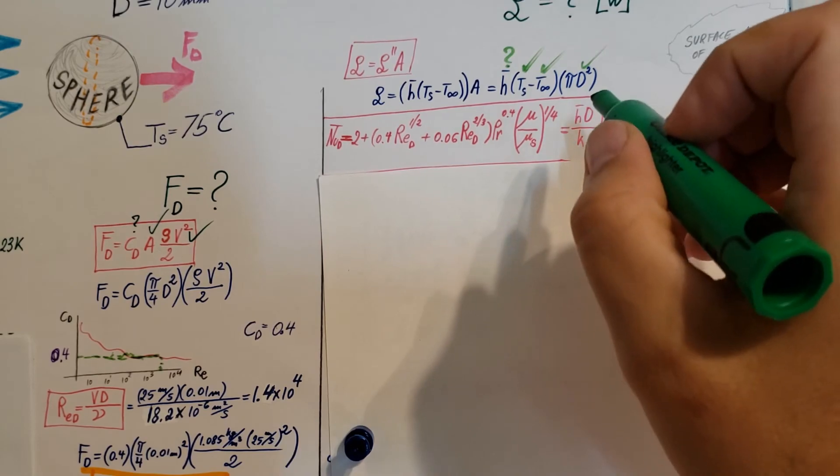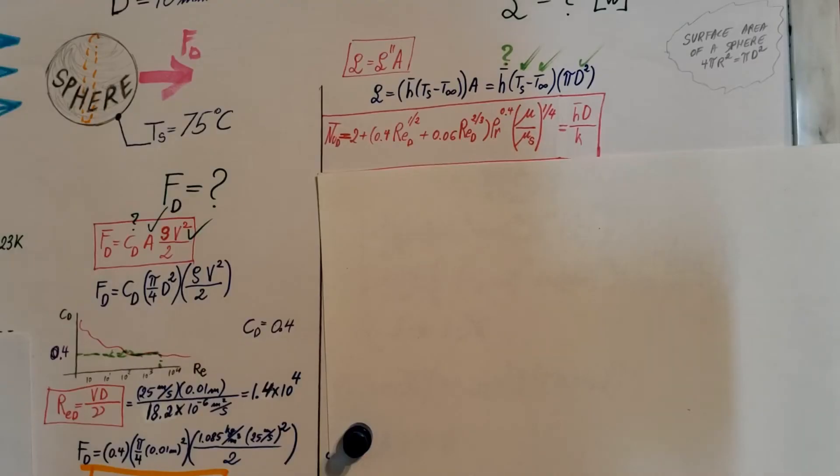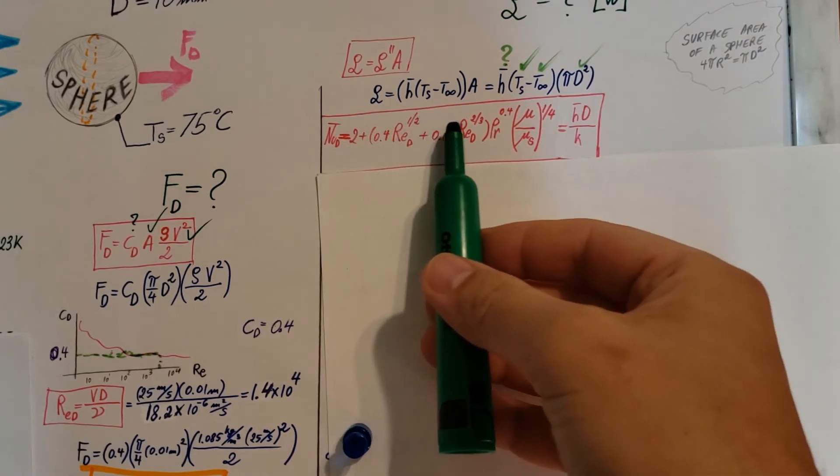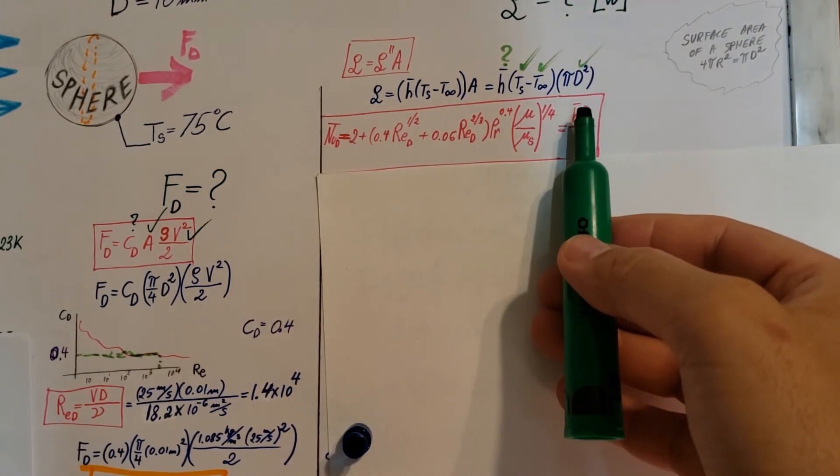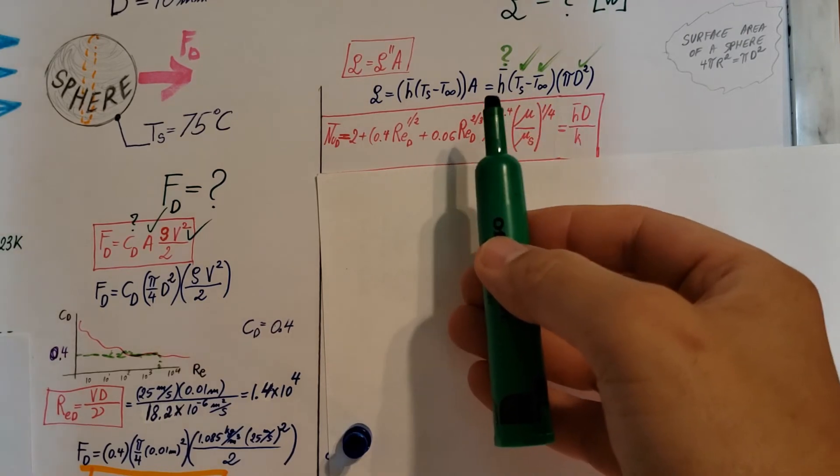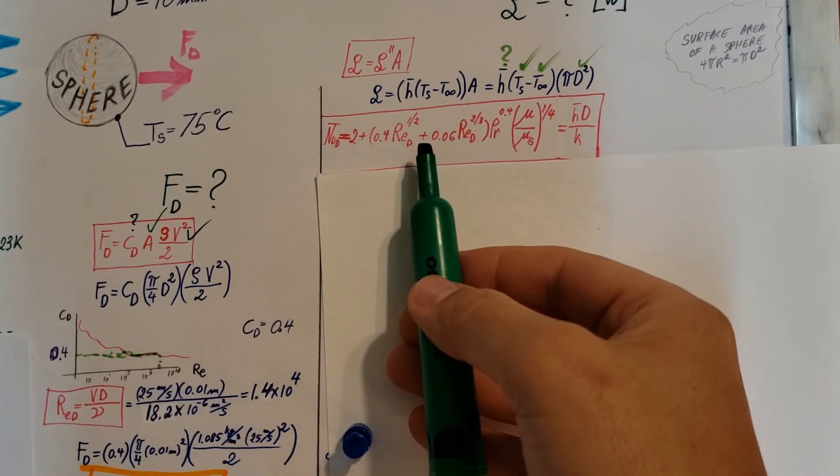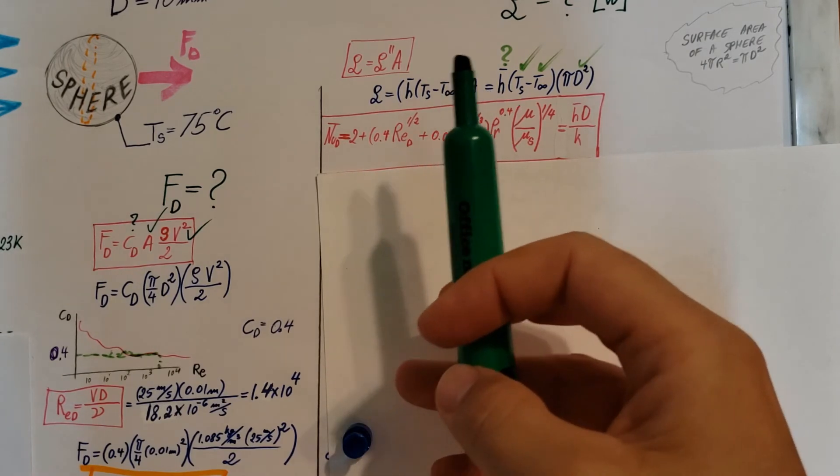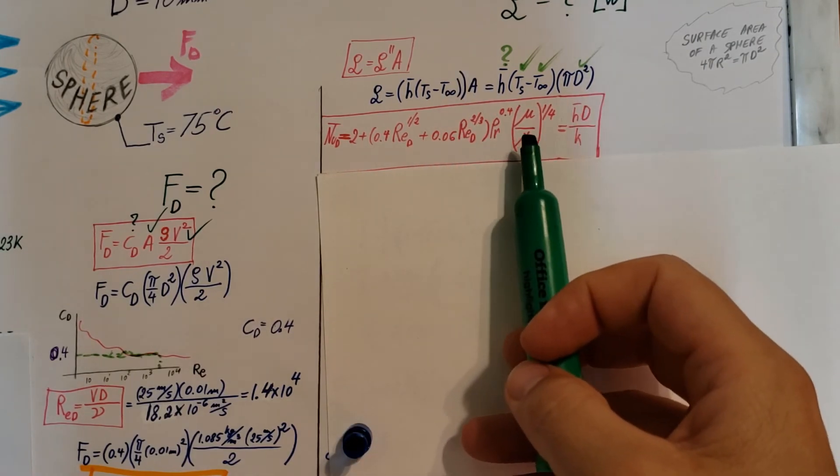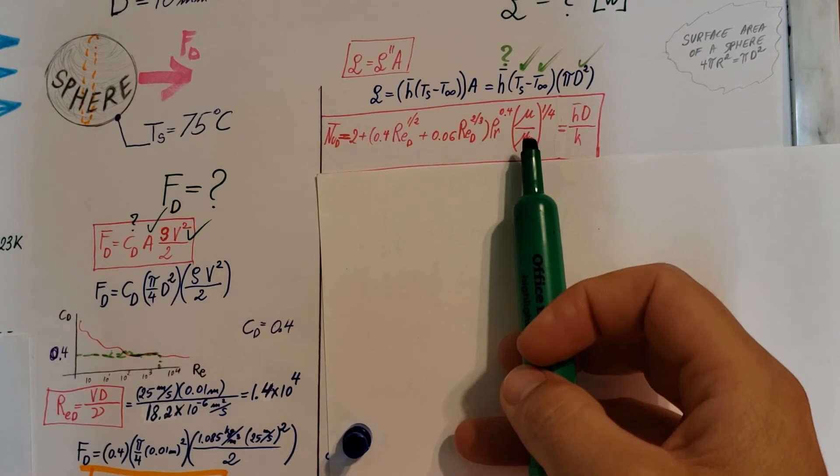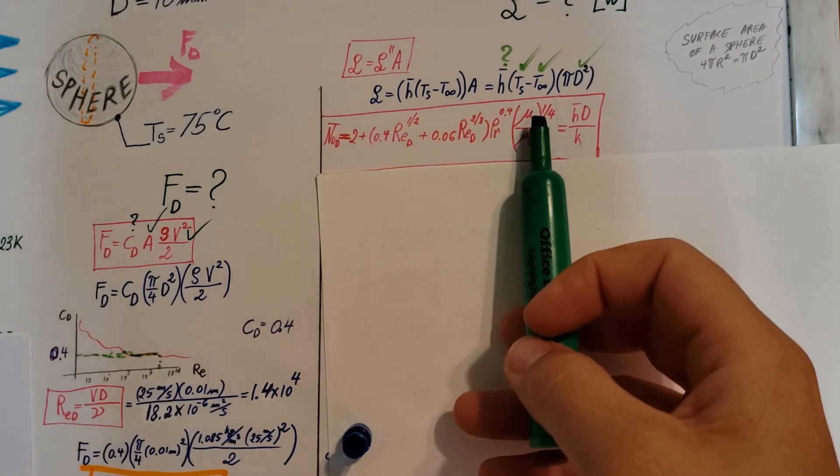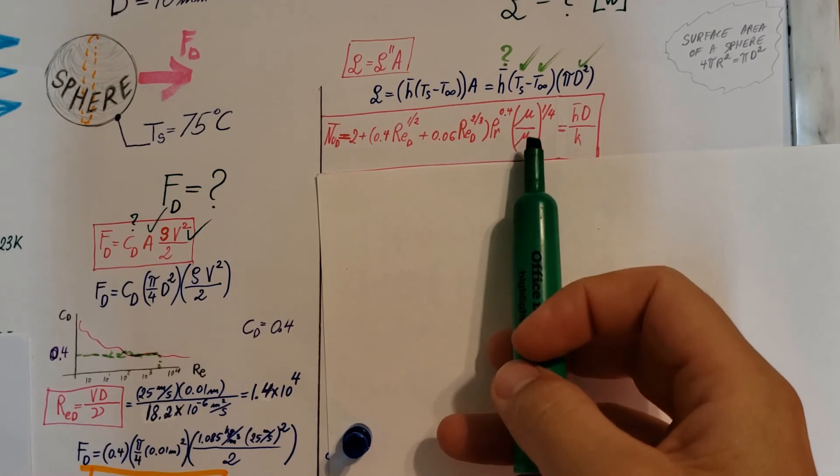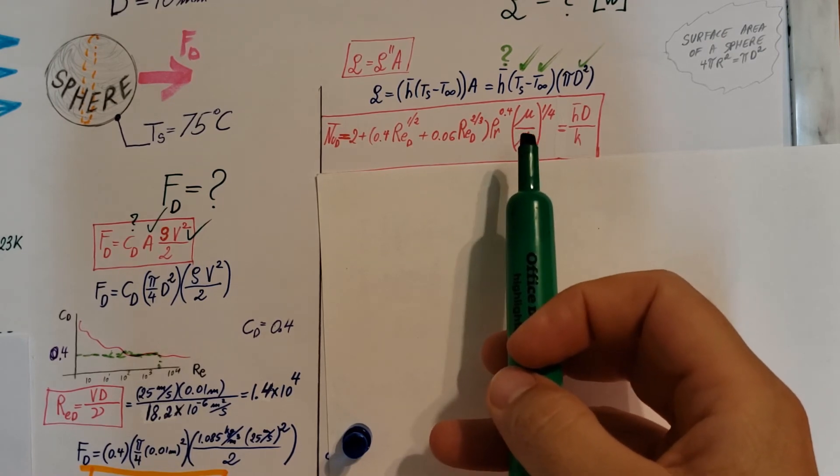There you go. Now one thing we need to remember when we're working with this formula is that all the properties from the tables that we need to get, we need to find them at T infinity, at the temperature of the fluid, except this guy right here, the dynamic viscosity. This one we need to find at infinity, but this one at the surface temperature of the material.